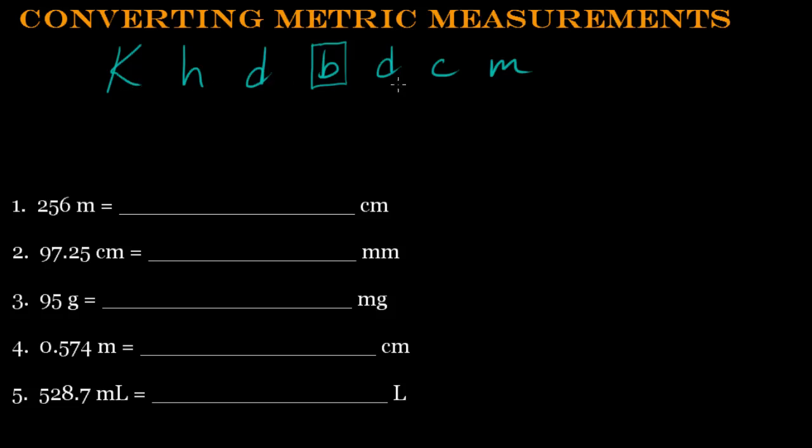And again, we're going to try to use that mnemonic device. That's King Henry died by drinking chocolate milk. I did a couple other videos on that. You can check out on my YouTube channel. I'll put a link that you can click on.